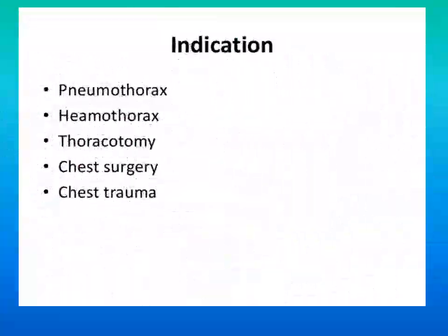The indications include pneumothorax, hemothorax, thoracotomy, chest surgery, and chest trauma. Pneumothorax refers to air in the thorax and hemothorax refers to blood in the thorax. Any open thoracotomy procedure, chest surgery, or chest trauma are indications for intercostal drainage.